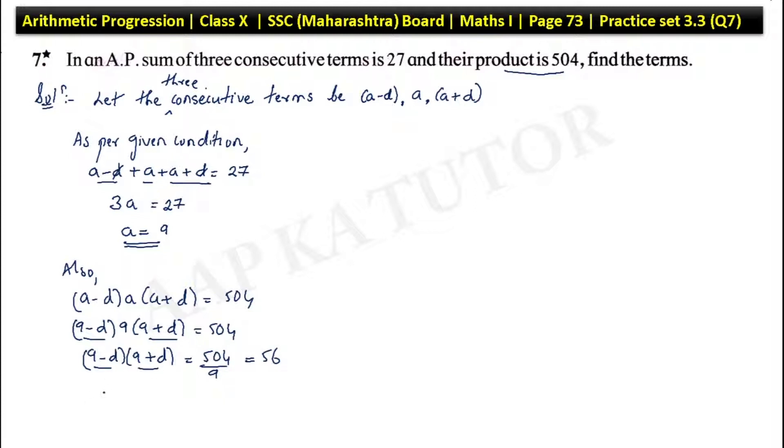Using the formula a minus d into a plus d, this is 9 square minus d square equal to 56. Therefore, 81 minus d square equal to 56. So therefore, d square equal to 81 minus 56, which is equal to 25. So therefore, d value is plus minus 5.